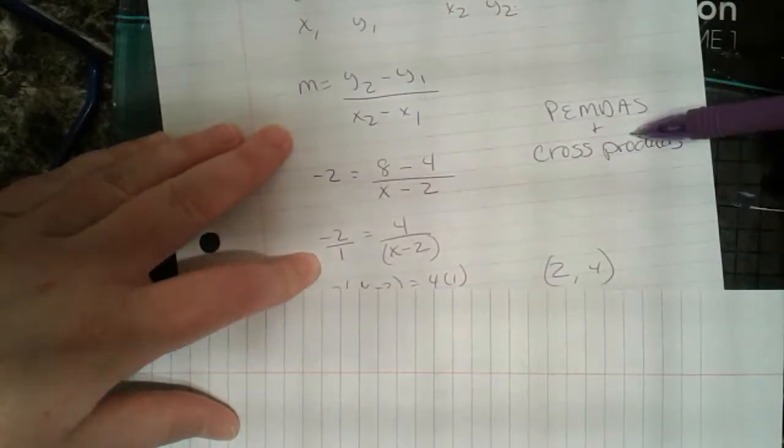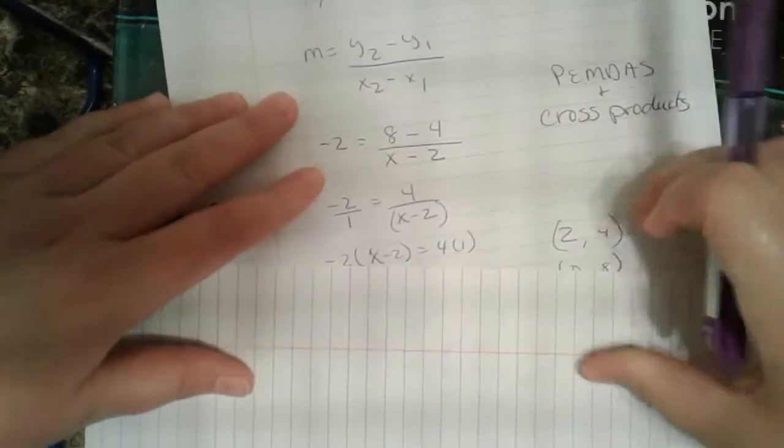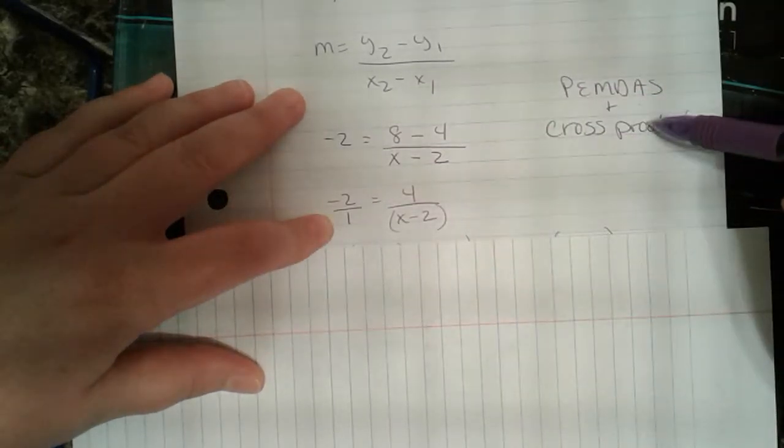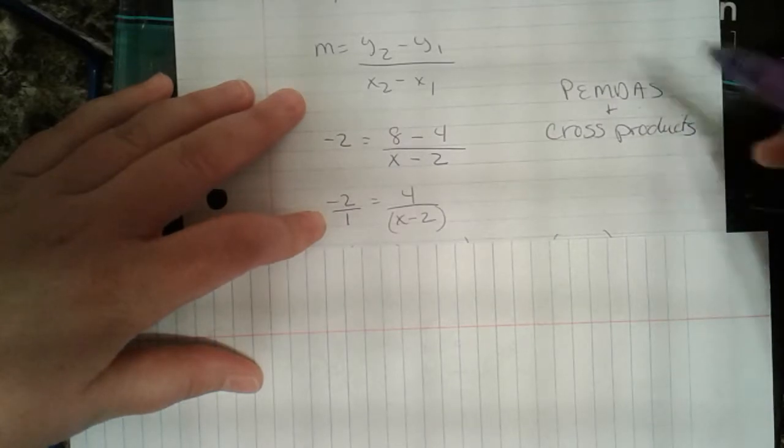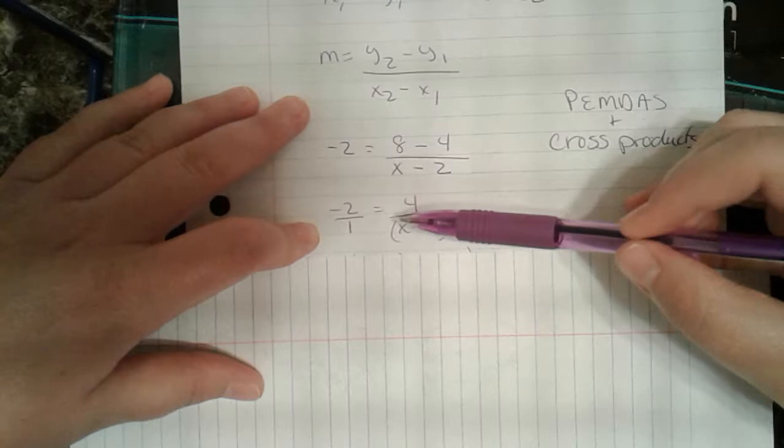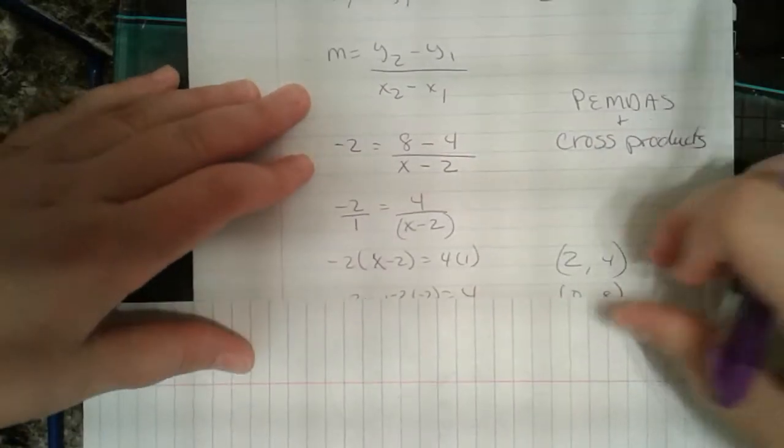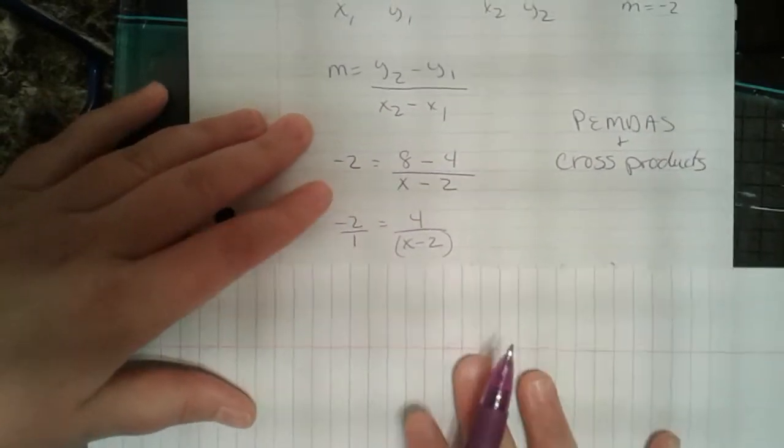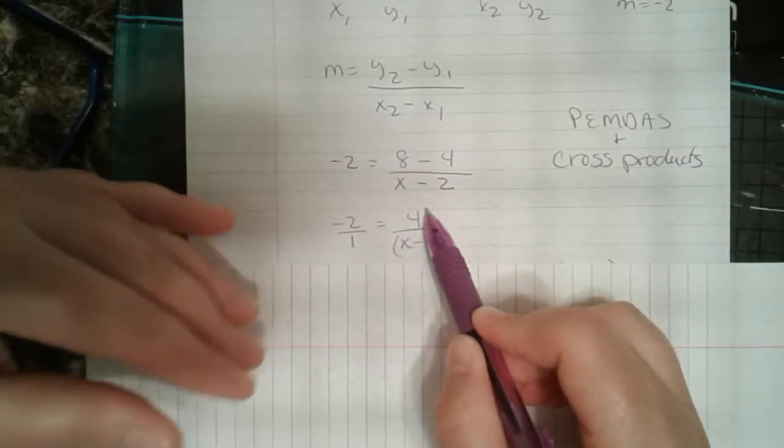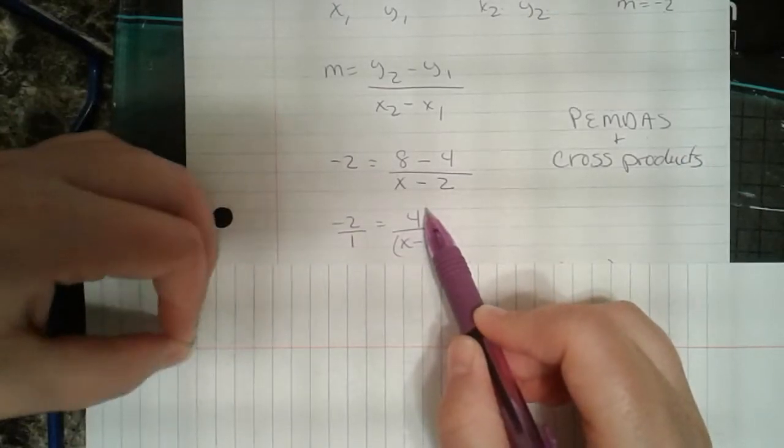Why am I doing that? Because of cross products. Cross products allows me to, putting it over 1 will help me make sure that I do my cross products correctly. And what is cross products? Remember that cross products is when I draw my x over it. Draw my cross over it. And remember too, that x minus 2 is in the denominator. Therefore, it is a group. Therefore, it needs to be put in parentheses.